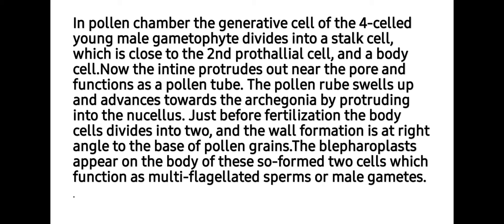The entire prothallus emerges near the pore and functions as a pollen tube. The pollen tube swells up and advances toward the archegonia by protruding into the nucellus. Just before fertilization the body cell divides into two, and wall formation is at right angles to the base of the pollen grain. Double blepharoplasts appear on the body of these two cells, which function as multi-flagellated sperms or male gametes.